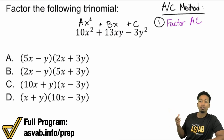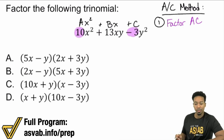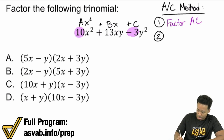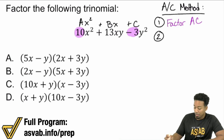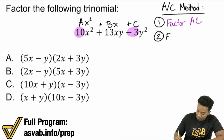Step one is to find the factors of A times C — that's 10 and negative 3. Step two is to find the factor pair that adds to B, which is 13. So first factor AC, then find the pair that adds to B.